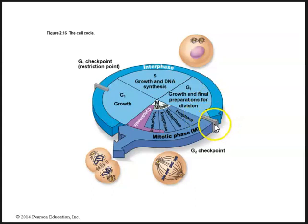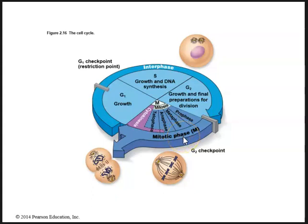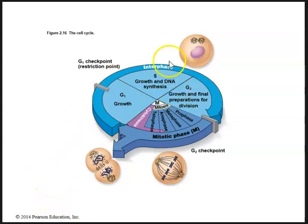After the G2 checkpoint, the cell enters the M phase or mitotic phase. A good way to remember the different phases in mitosis is PMAT: prophase, metaphase, anaphase, and telophase, followed by cytokinesis. Knowing the cell cycle stages is important in pharmacology — specifically in treating cancer. Cancer is an abnormal growth or production of abnormal cells, and if we can find a drug that stops the cell cycle at a specific phase, we can potentially stop the abnormal growth of cancer cells.